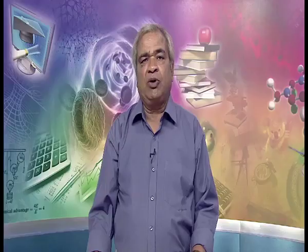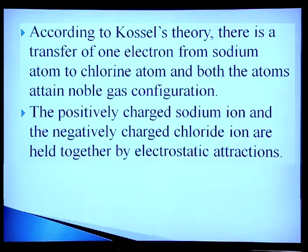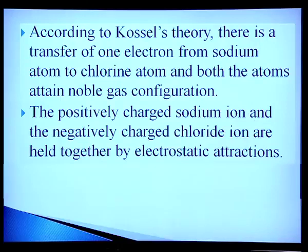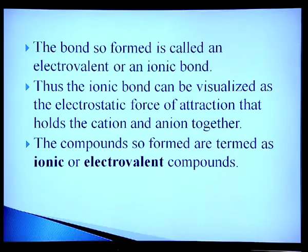If you take the example of sodium chloride, according to Kossel's theory, there is a transfer of one electron from the sodium atom to the chlorine atom, and both atoms attain noble gas configuration. The positively charged sodium ion and negatively charged chloride ion are held together by electrostatic attraction. The bond so formed is called an electrovalent or ionic bond. The ionic bond can be visualized as the electrostatic force of attraction that holds the cation and anion together, and the compounds so formed are termed ionic or electrovalent compounds.